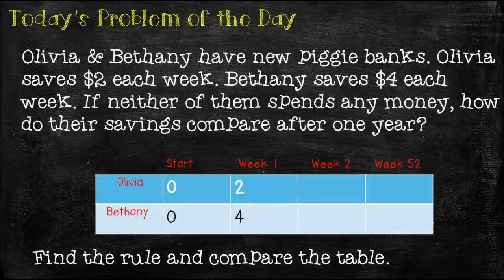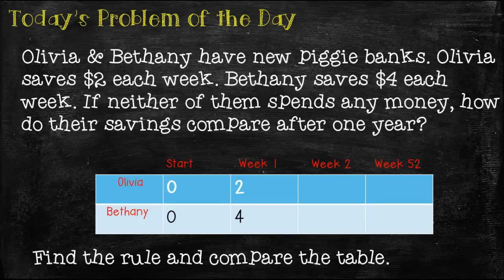So here's today's problem of the day. Olivia and Bethany have new piggy banks. Olivia saves $2 each week. Bethany saves $4 each week. If neither of them spends any money, how do their savings compare after one year? You need to find the rule and compare the table.